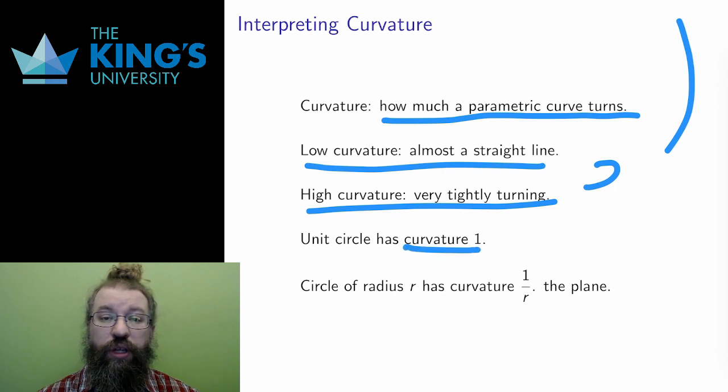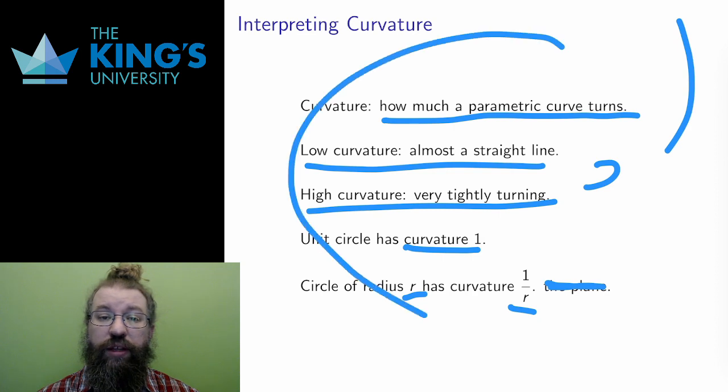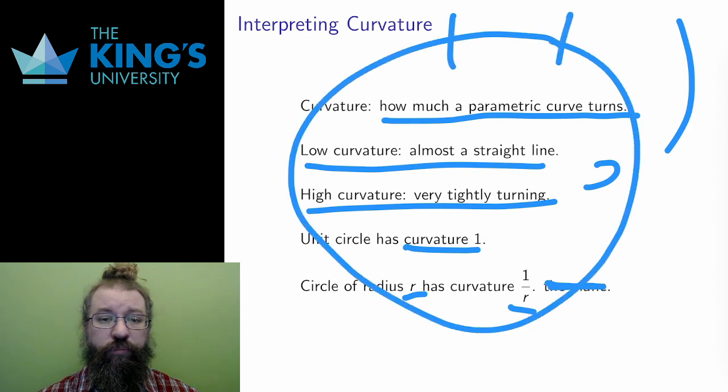For other circles, the curvature is the reciprocal of the radius. Hopefully this makes sense. A large circle has very slow curving. It looks almost straight if you look at a piece of it. Therefore, larger radius gives small curvature. But a small circle is very tightly turning, therefore has a large curvature.